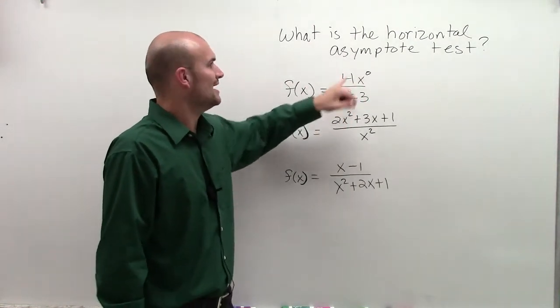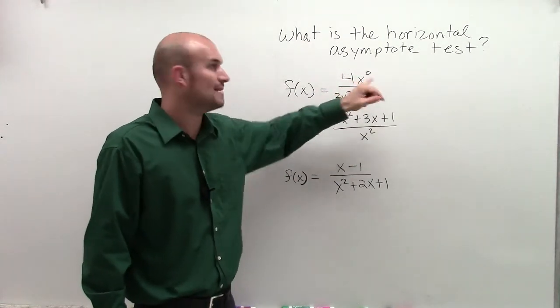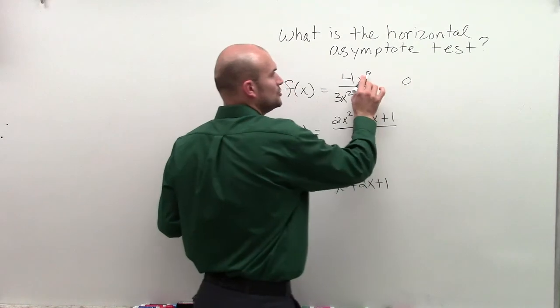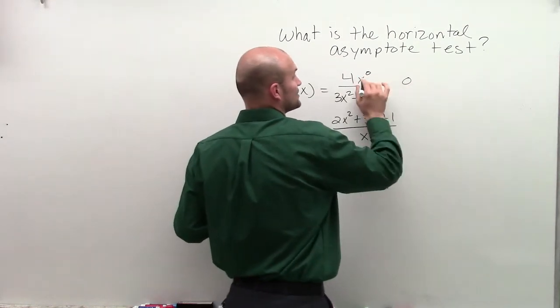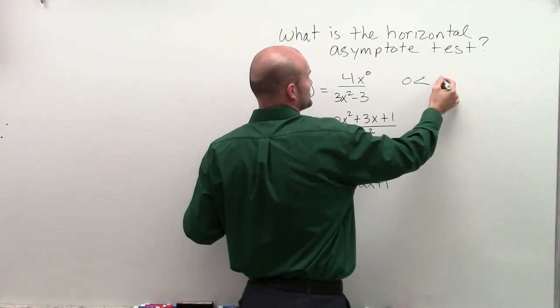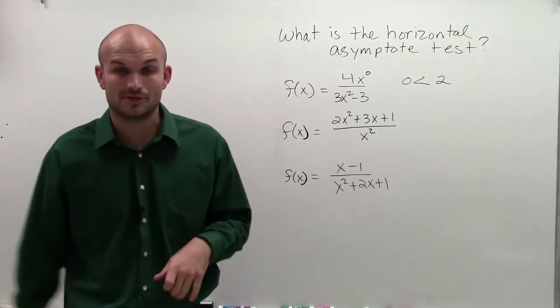I'm sorry, I don't need to look at my coefficients. I need to look at my degrees of my leading terms. And what you could say is 0, the degree in your numerator, is less than the degree in your denominator. So 0 is less than 2.